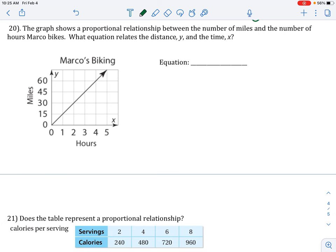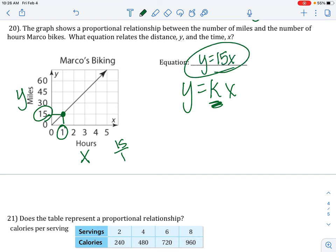The graph shows a proportional relationship between miles and number of hours that Marco bikes. What equation relates to the distance and time? So, we just need to know y equals kx with a number in the place of k. Pick a point. Take your y divided by your x. 15 over 1 is just 15. So our equation is y equals 15x.